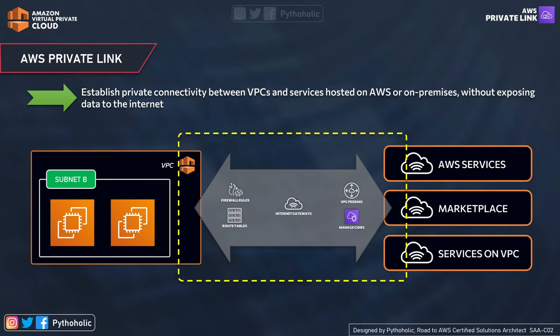Before moving forward with what Private Link is and how it works, just forget everything about AWS. If in general I ask you what comes to mind when I say the term 'private link' — speaking in common English vocabulary — you might tell me it's a link connecting two points, creating a connection between them. And if it's a private link, then the parties involved in the communication are the only ones who can interact with each other at a given point of time. And that's how a private link is formed.